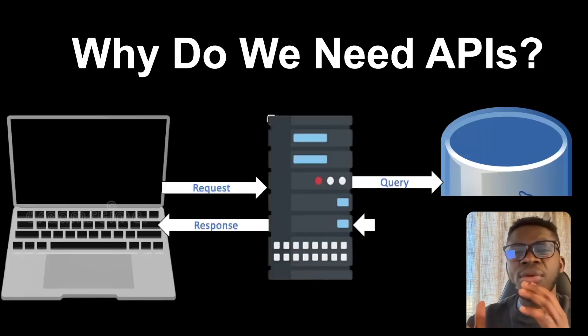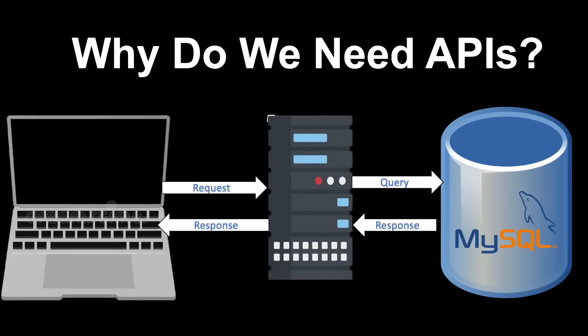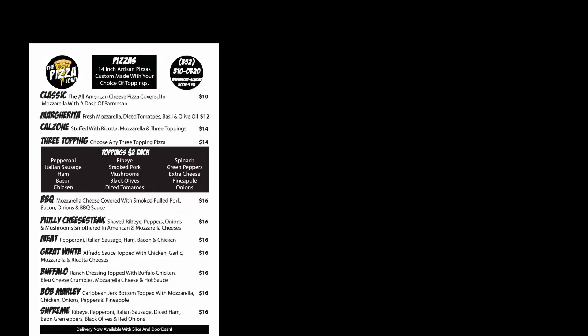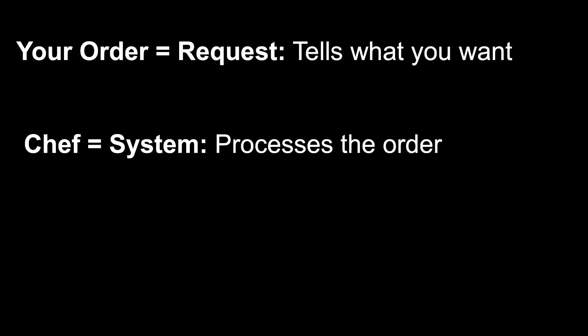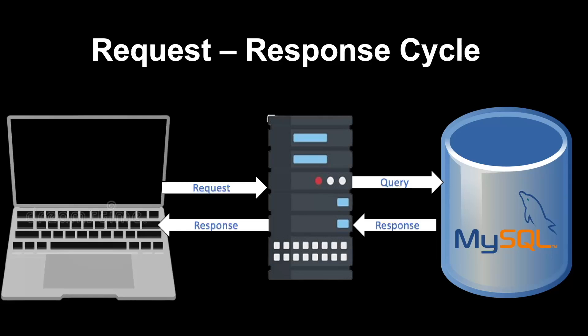Imagine you're at your favorite pizza joint. The menu is just like the API documentation — it lists all the options you have. You call out your order — that's your request. The chef takes note and makes it for you — that's your response. This whole process is known as the request-response cycle.